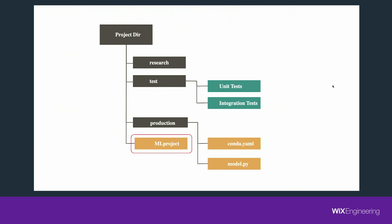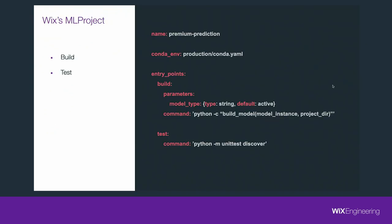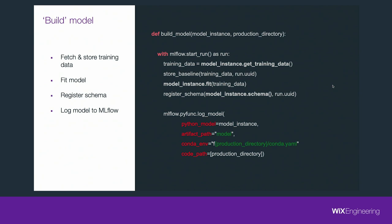Going back to the directory structure, we now have an ML project file, which I like to think about in this context as a build file — like a pom.xml for some Java-based artifacts or a setup.py for Python modules. This is a pseudocode version of our standard ML project YAML file we use here at Wix. This YAML file has two entry points: build and test. The build command invokes this build_model function — that's the real heavy lifting. Let's go over it. Simplifying things here a bit — our production code is more verbose, but it bears the exact same spirit.